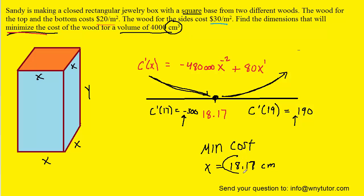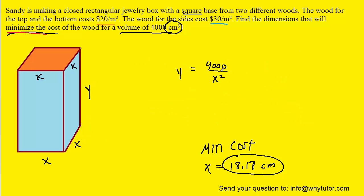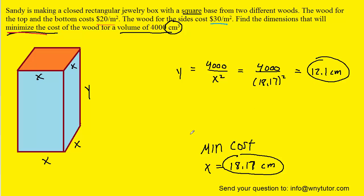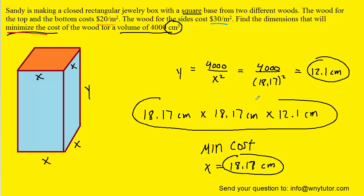To find Y, we recall that Y equals 4000 divided by X squared. Plugging in 18.17, we get Y approximately equal to 12.1 centimeters. Therefore, the dimensions of the box are 18.17 centimeters by 18.17 centimeters by 12.1 centimeters — that is the correct answer to the question.